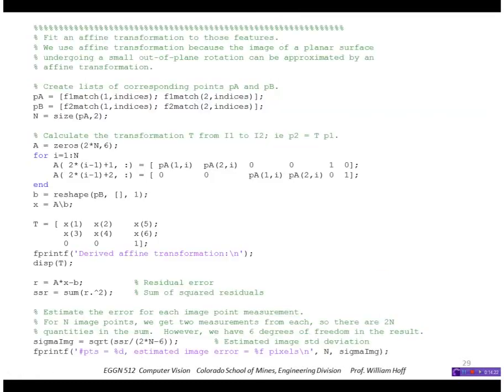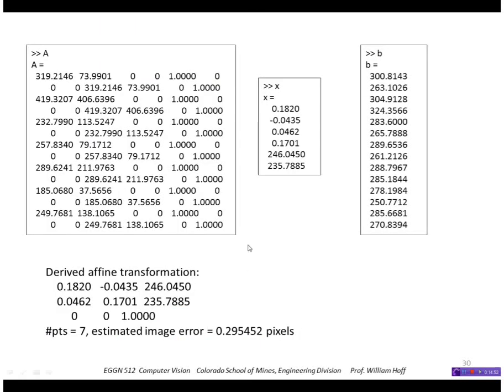So this is the code that fits an affine transformation to those two sets of points. It's going to form the equation Ax = b, where x is our unknown values in the affine transformation. And finally, we'll estimate the error in the image point measurements from the residual, and we can use that to detect bad fits or outliers. So this is that matrix A, here's our unknowns x that we've solved for, and here's the vector b. Pulling those elements out of x and putting them into a three by three affine transformation, we get this. And our error is pretty low - it's only 0.29 pixels.